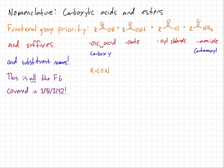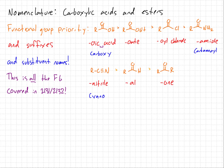After amides come nitriles, which we'll cover in a later chapter, followed by aldehydes, followed by ketones. Nitriles are called 'nitrile' as the parent functional group suffix, and they're named as cyano groups if they are substituents. Aldehydes and ketones, which we covered in a previous chapter, are named 'al' and 'one' respectively, and both are given the name 'oxo' as a substituent.